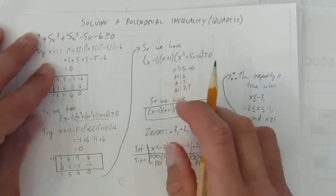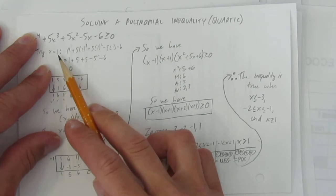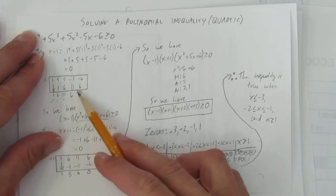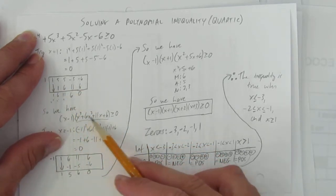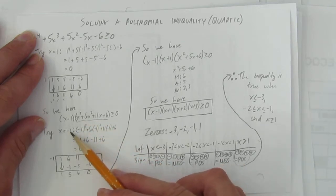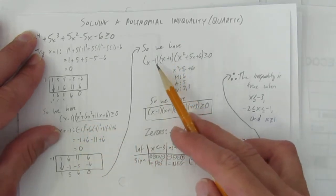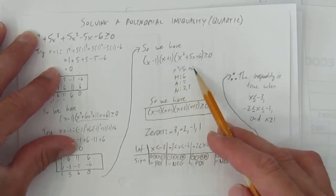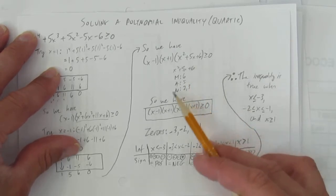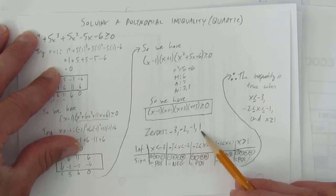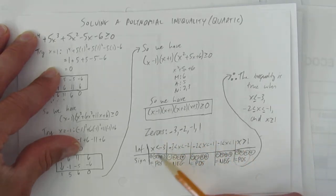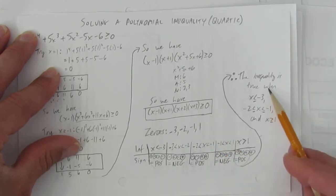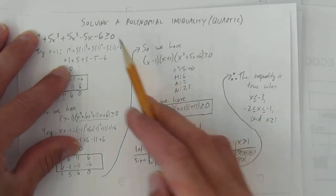Now we're done. We solved this polynomial inequality by using the factor theorem to find zeros for synthetic division, which gives us our factors. We had to do it twice because we still had a cubic after the first pass. We got down to a quadratic and used the Bergmann technique to factor it. We identified the zeros, made the interval table, found the positive and negative intervals, picked the positive ones, and finally added the equal signs because we're allowed to equal the zeros.